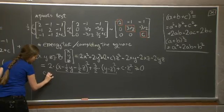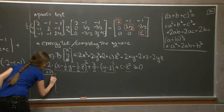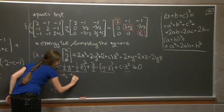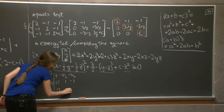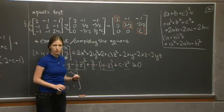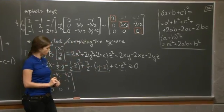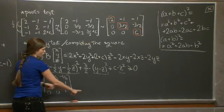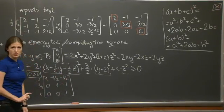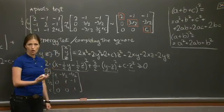Now, to the question of whether this can equal 0 without x, y, z all being 0: if c is strictly bigger than 0, we can write this as the matrix [2, 3/2, c] times the squares of [x − y/2 − z/2], [y − z], and [z]. For the sum to be 0, all three squared terms must be 0 — meaning z = 0, y − z = 0, and x − y/2 − z/2 = 0. Since this system has all pivots, the only solution is x = y = z = 0. So the matrix is positive definite.